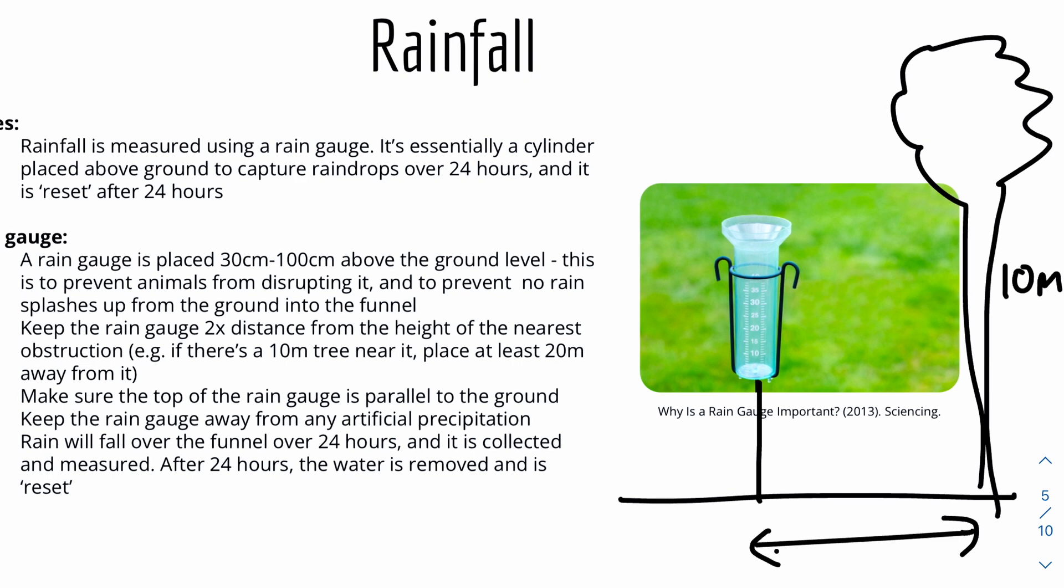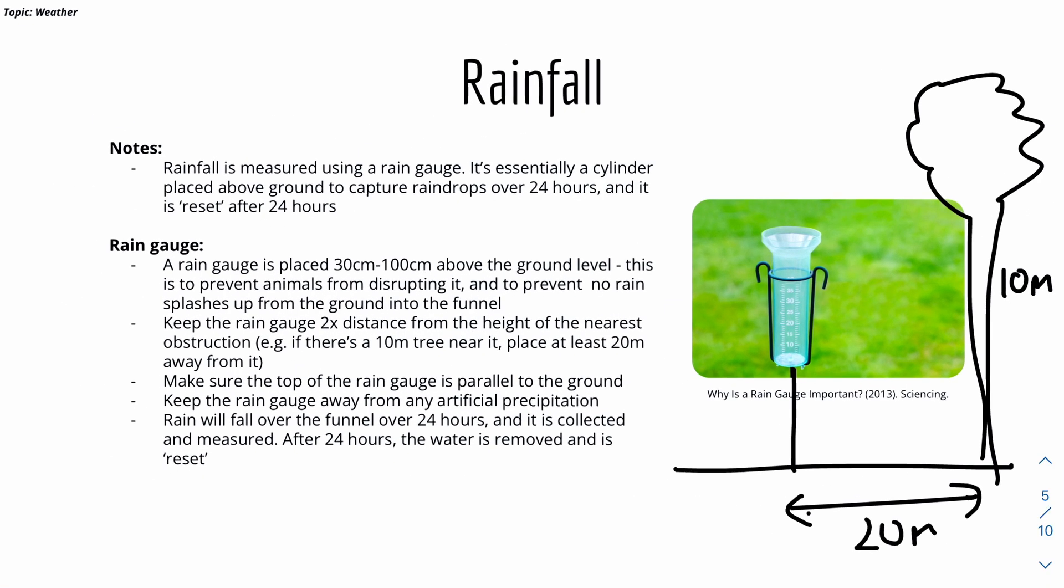Because if it were to be placed too close, then the tree or the obstruction might interfere with the readings. Because there may be droplets of rain that will fall in, or basically from water or whatever things that will fall into the funnel.